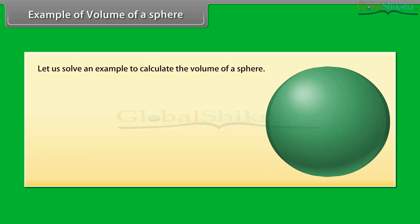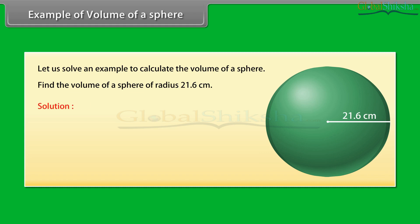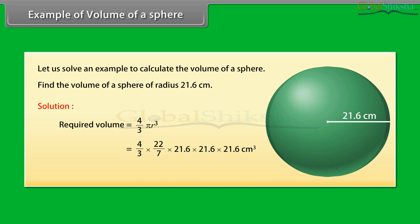Let us solve an example to calculate the volume of a sphere. Find the volume of a sphere of radius 21.6 cm. Required volume equals 4 upon 3 pi r cube, which equals 4/3 into 22/7 into 21.6 into 21.6 into 21.6 cm cube, which equals 42,230.34 cm cube.